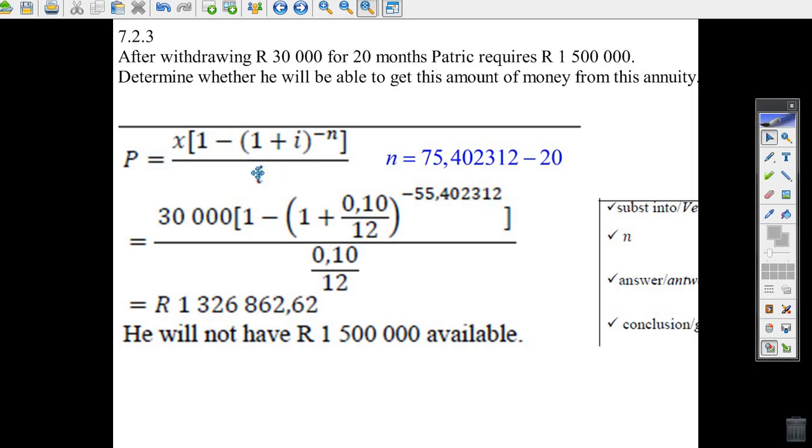You know, multiply the whole loan by the interest and then subtract the future value. That's just as good. But this is a quick one step way. You just put negative 55.402312 in there, put the interest rate in, put the 30,000 in and see what the balance is.